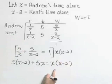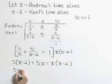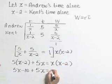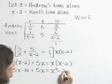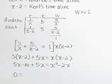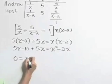Now let's solve this resulting equation. Distributing, we get 5x minus 10 plus 5x is equal to x squared minus 2x. Here we have a quadratic equation. Let's put it in standard form. I'm going to move everything to the right-hand side, setting that equal to 0 on the left-hand side. We have this term x squared.